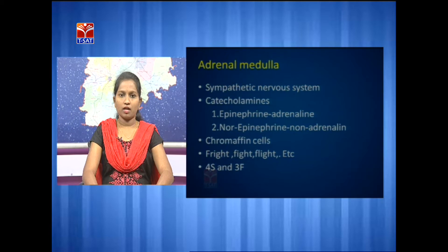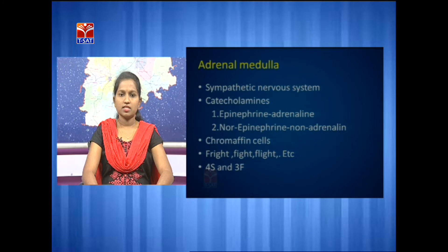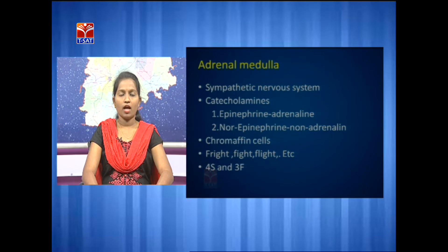The adrenal medulla secretes hormones when the sympathetic nervous system is stimulated. The hormones of the adrenal medulla are called catecholamines — they are epinephrine or adrenaline, and norepinephrine or noradrenaline. The cells of the adrenal medulla can be stained by chromic acid, hence they are also called chromaffin cells. The adrenal medulla secretes hormones during emergency, stress, or danger conditions — hence this gland is called the emergency gland and its hormones are called fight-or-flight hormones.